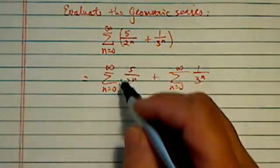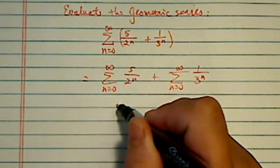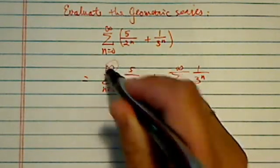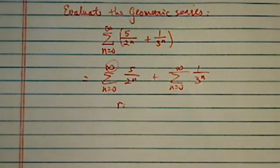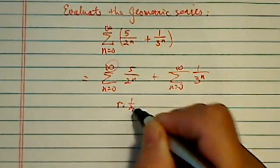For each one of those, when we evaluate, we need two things. Since it's infinity, we need to figure out where the r is, what the ratio is. For this case, it's 1 over 2.